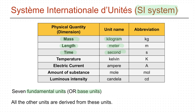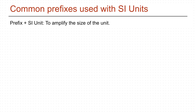For example, the unit of velocity is meter per second, which is derived from the units of length and time. Similarly, the unit of acceleration is meter per second squared, also derived from the units of length and time.